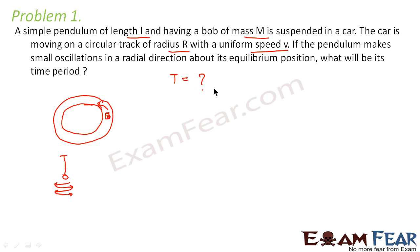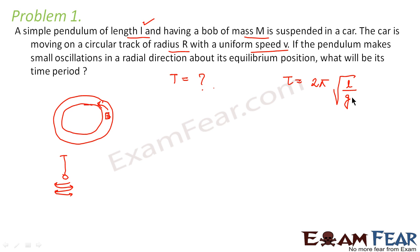We have to calculate the time period of the simple pendulum. The formula for time period is applicable for any simple pendulum: time period T = 2π√(L/g). If we know the length of the pendulum and the effective acceleration due to gravity, we can calculate the time period. The length L is clearly given in the problem.